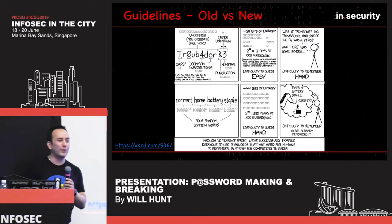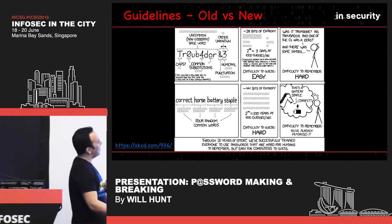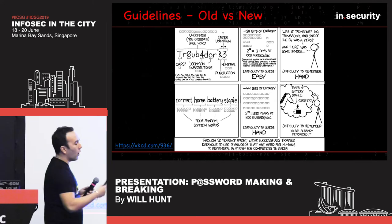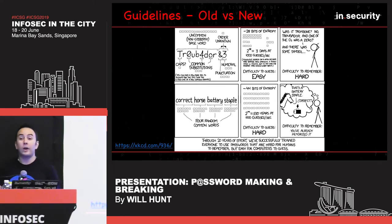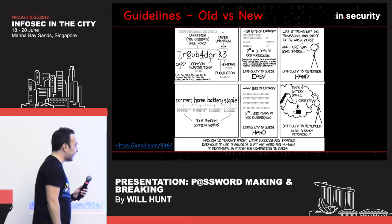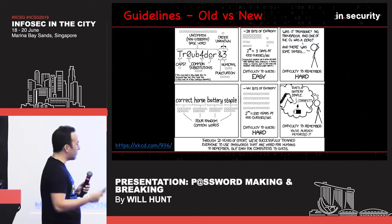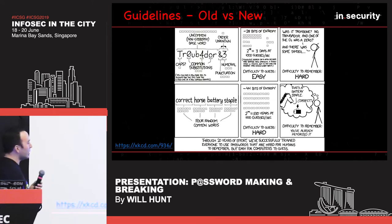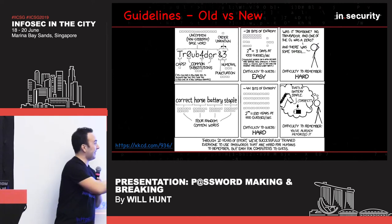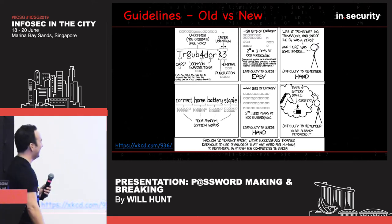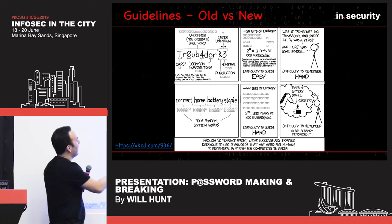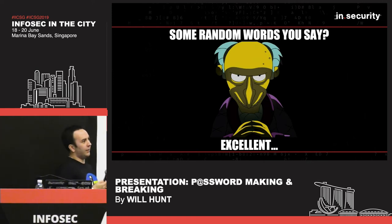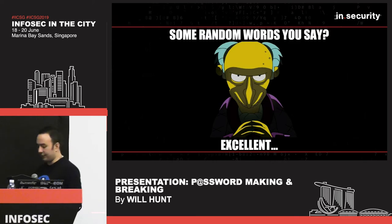Has anyone seen the XKCD comic? Around mid-2017, when NIST pushed out their guidelines, this was flying around on every site. It targets online attacks but the underlying principle still applies offline: through 20 years of effort, we've successfully trained everyone to use passwords that are hard for humans to remember but easy for computers to guess — because we've all been told to make passwords that look like random character strings. 'Correct horse battery staple' — you'd be surprised the number of people who, after seeing this, actually used that as their password. Those words do appear in dictionaries. We should be looking at four-plus random common words, but now we need to see if we can start attacking passphrases too.